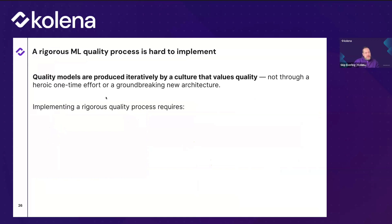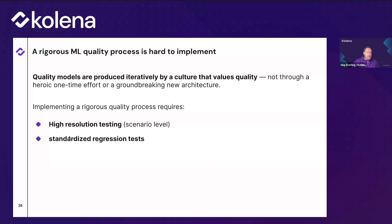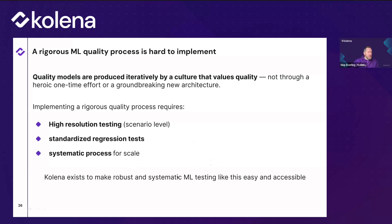To summarize the three areas: a rigorous ML quality process requires high-resolution scenario-level testing, standardized regression handling, and systematic product-level evaluation. These are produced iteratively — you need a culture that values quality repeatedly, not just a one-time effort. The nature of the domain is that things are constantly changing. If you want to scale your product or team, you need a systematic process in place; otherwise failures will become unmanageable.